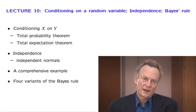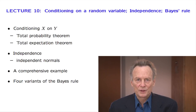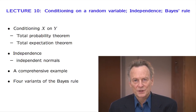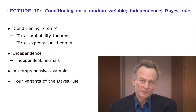We will also define independence of continuous random variables, a concept that has the same intuitive content as in the discrete case. That is, when we have independent random variables, the values of some of them do not cause any revision of our beliefs about the remaining ones.